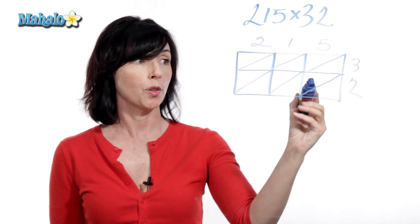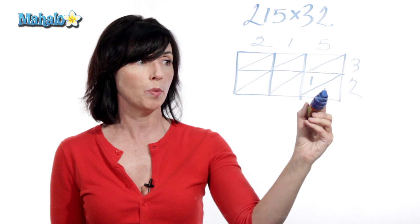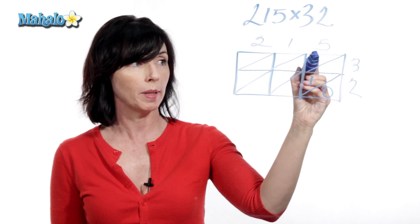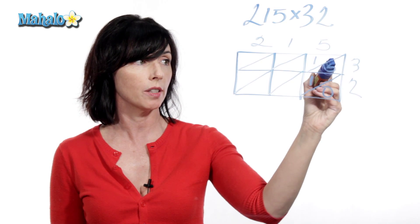5 times 2 is 10. So this is my tens digit and that's my ones digit. 5 times 3 is 15. So I put my tens digit there and my ones digit there.